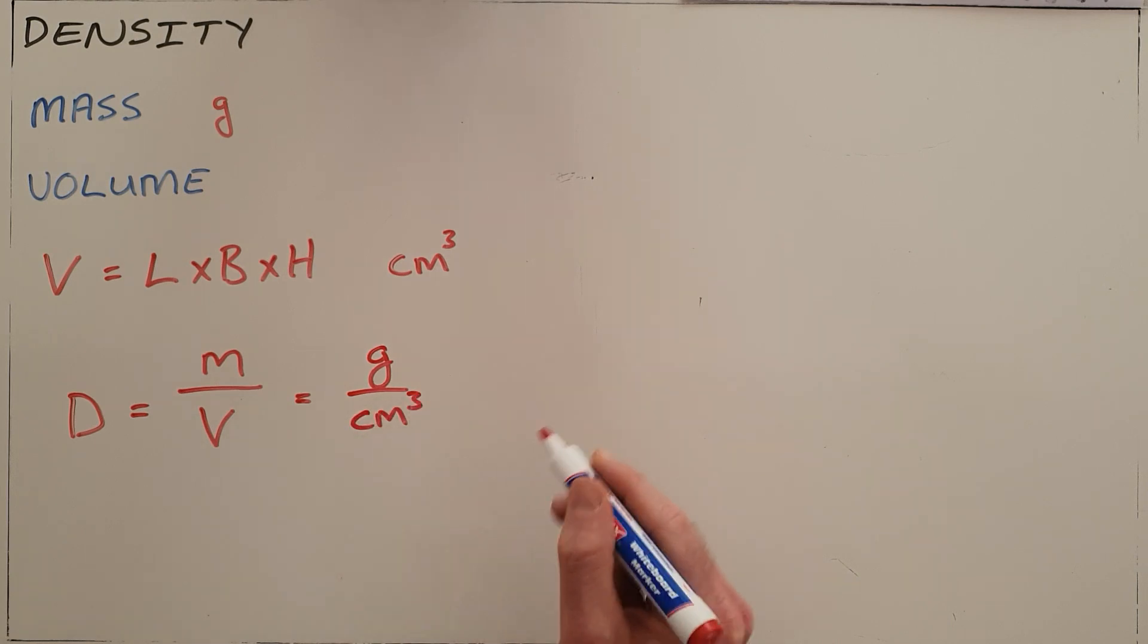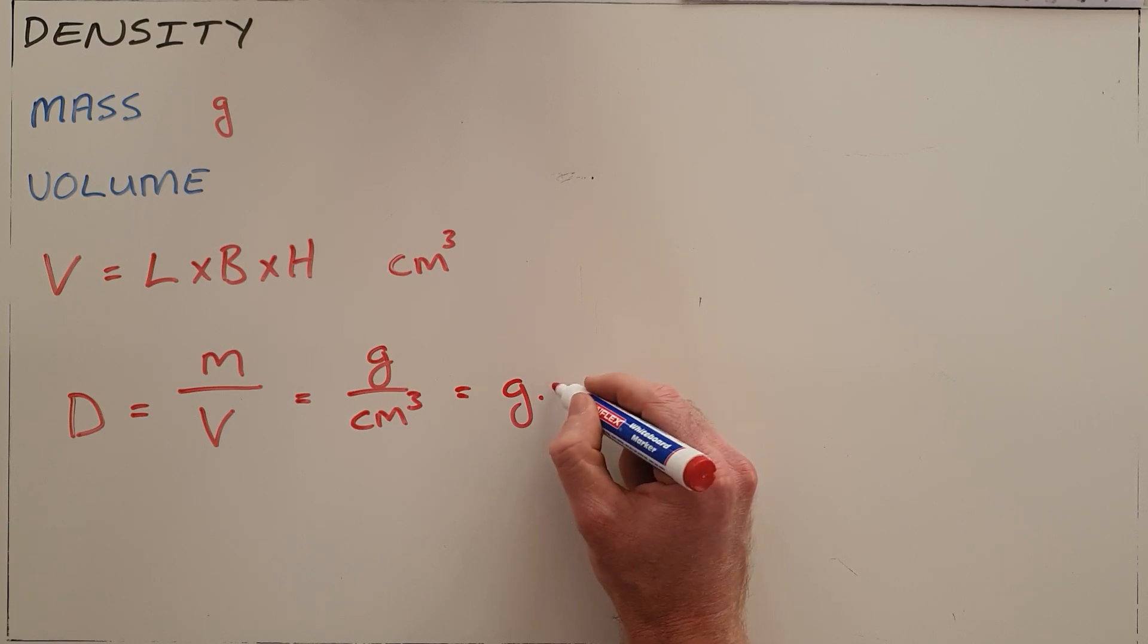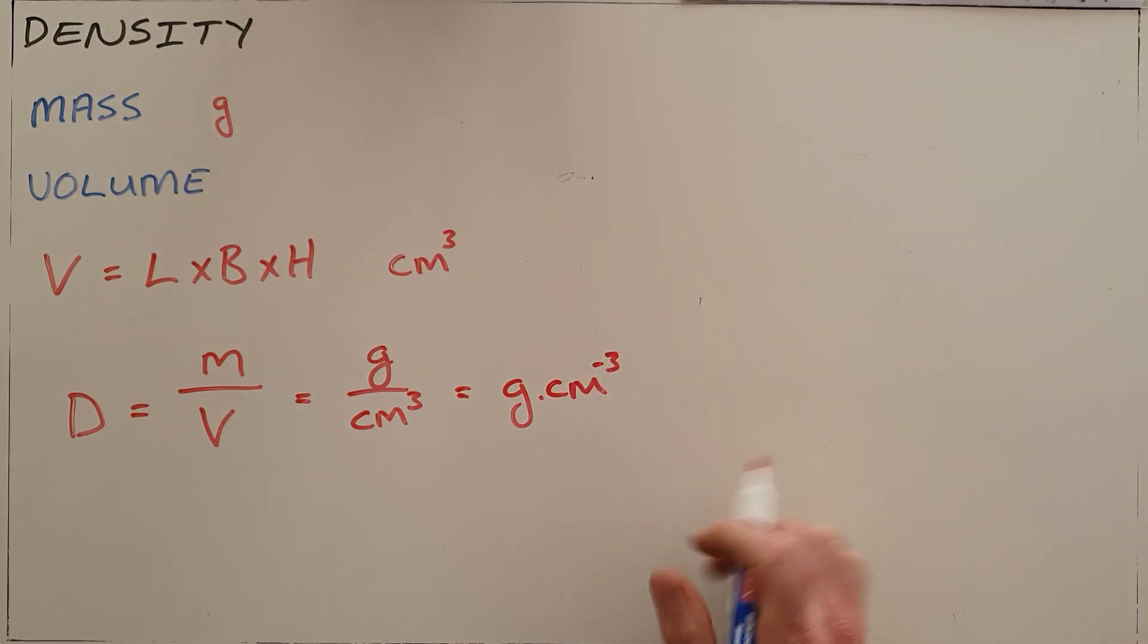We say that density is measured in grams per cubic centimeter. What that tells us is that one cubic centimeter—one block that is one centimeter by one centimeter by one centimeter—would have a specific mass if we know its density. We're going to do an example of a calculation.